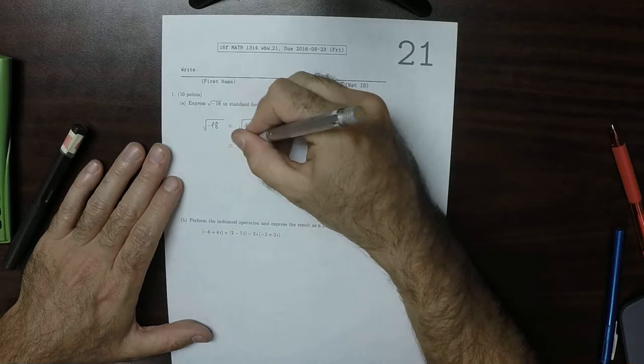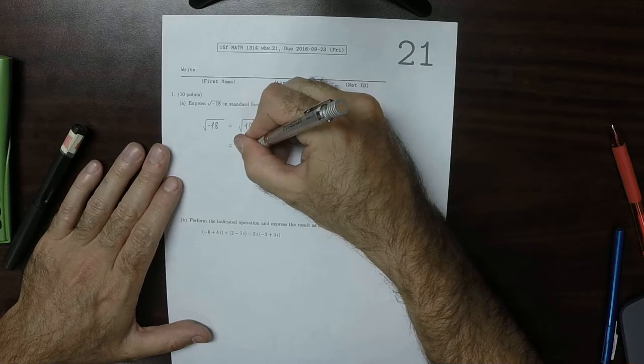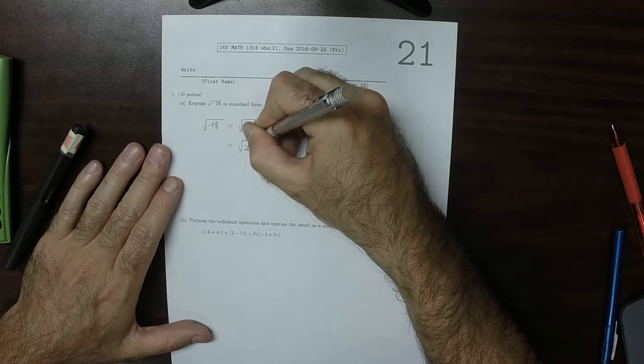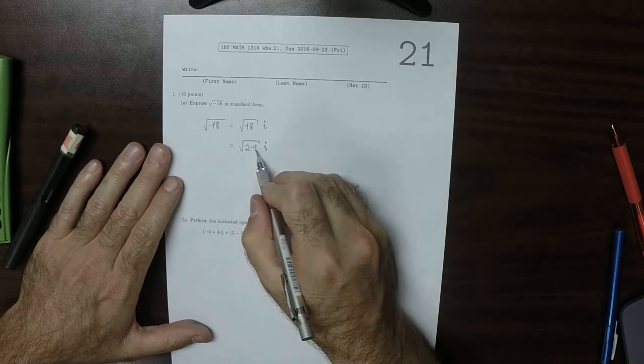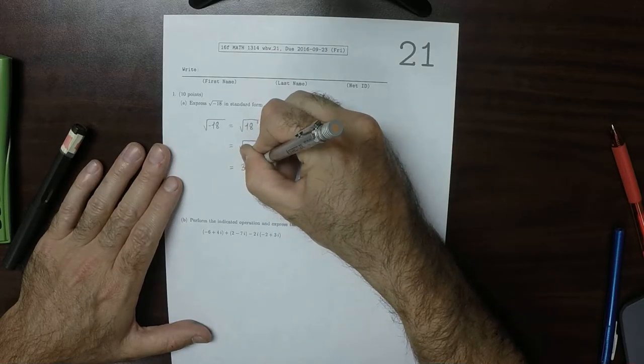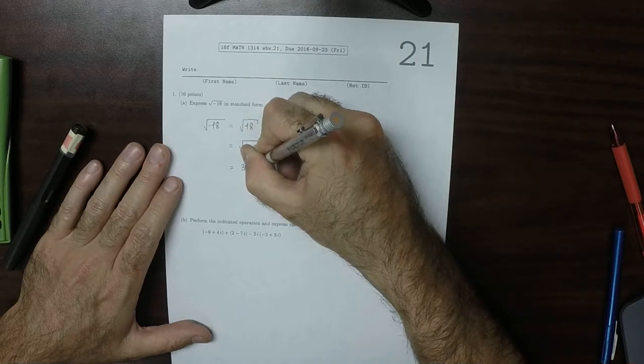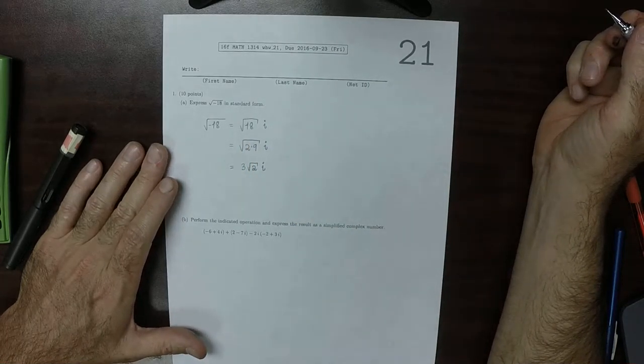And 18 can be expressed as 2 times 9. And then 9 is a perfect square, so it can come out as a 3. So that would be 3 square root 2 times i. So that's the answer of part a.